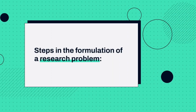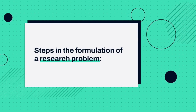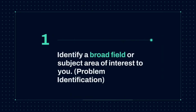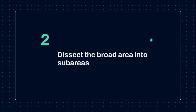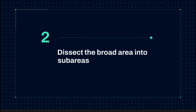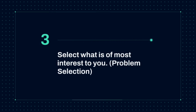Now let's look at the steps involved in formulating a research problem. Step one is to identify a broad field or subject area of interest to you — for example, non-communicable diseases. Step two is to dissect the broad area into sub-areas; under non-communicable diseases, we can have diabetes mellitus, hypertension, and many others. Step three is to select what is of most interest to you — for example, diabetes mellitus.